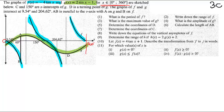Now they're saying C and 150 degrees are the intercepts of G. G cuts the x-intercept here at C and at 150 degrees. Those are the intercepts. Next thing they tell us, D is the turning point for G, that's over here, the turning point. The graphs of F and G intersect at 9.54 degrees and 204.62 degrees. So those points of intersection are these, and those are the numbers that correspond to them. AB is parallel to the y-axis. So AB is this line here, and it is parallel to the y-axis. And lastly, they're saying A is on G and B is on F.